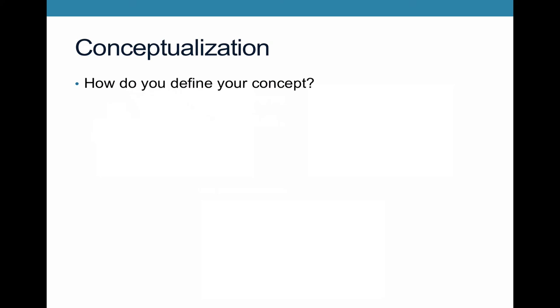Conceptualization is the process of actually defining your concept — when you say war or revolution, what do you mean? What does this entail? Often in political science, concepts are fairly complex and can't simply be a one-sentence definition. In economics, you might define economic growth simply as the growth in GDP in a country. But in political science, many of the concepts we're interested in are more complex — they have multiple dimensions, which are different lines along which you might have variation.